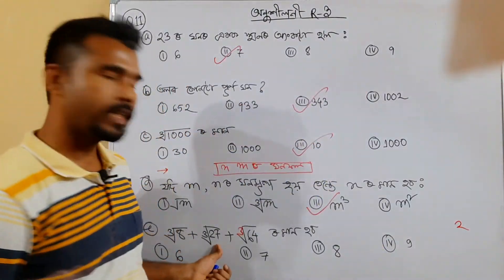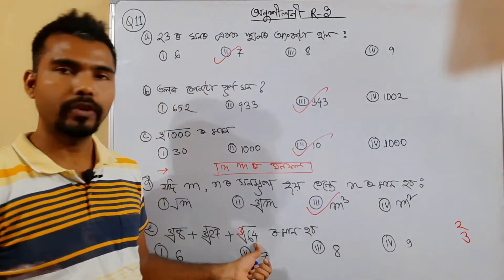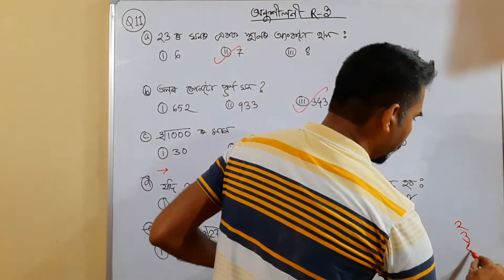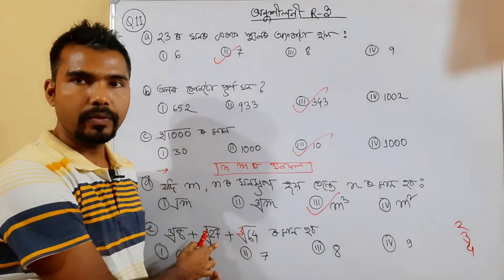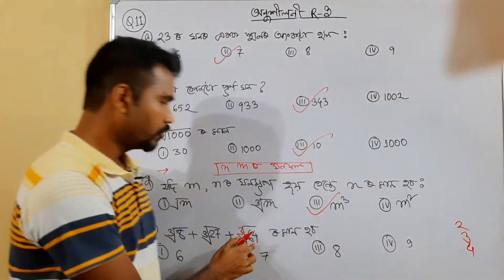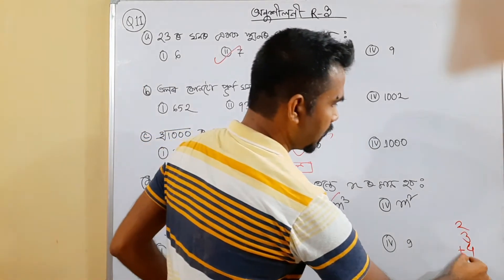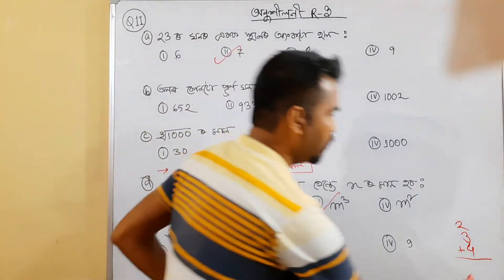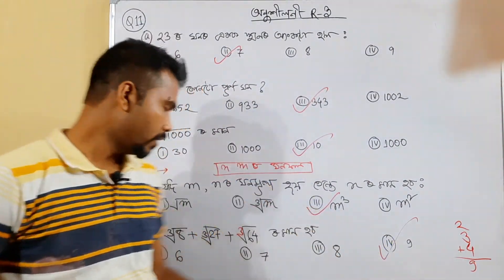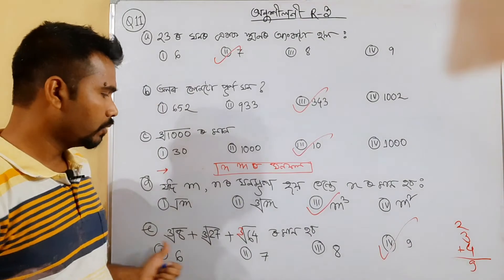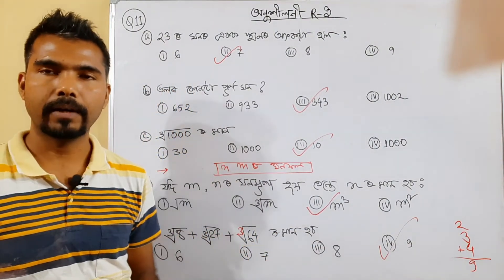The cube root of 27 is 3. The cube root of 64 is 4. So 2 plus 3 equals 5, plus 4 equals 9. Our final answer is option C — 4 and 9. So the real answer is 9. Question No. 11 is completely done.